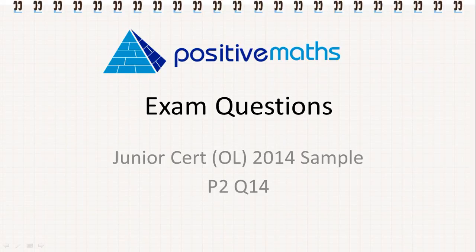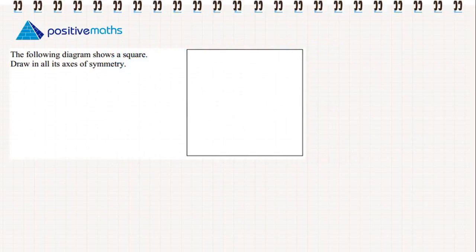In this video for Positive Maths we're going to look at the Junior Cert Ordinary Level 2014 sample paper. This is question 14 from paper 2. The following diagram shows a square. Draw all of the axes of symmetry.